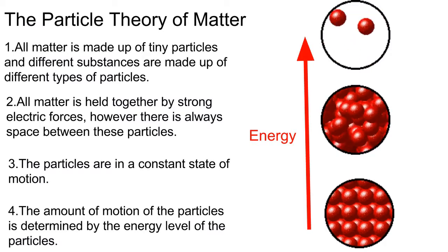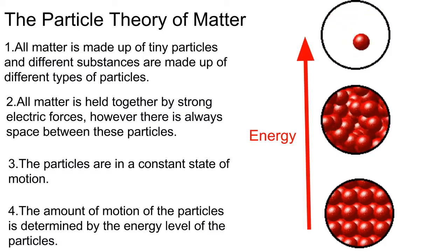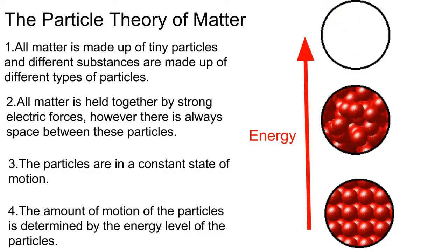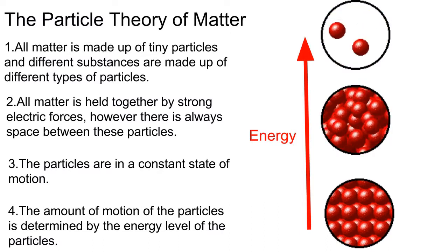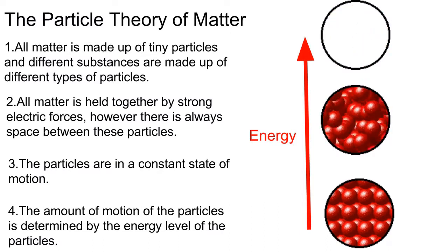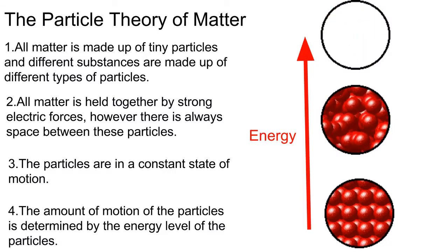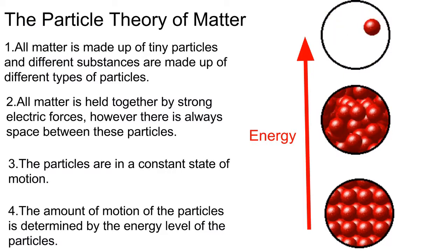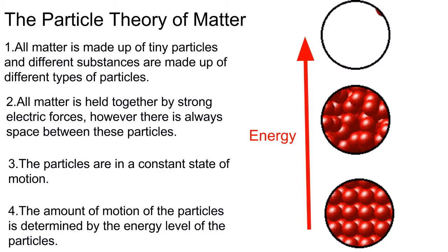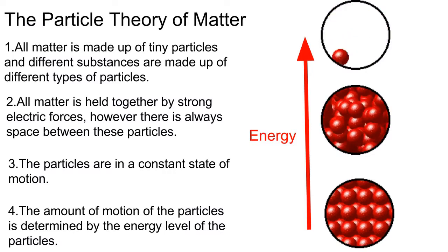As energy is added, you can see the particles begin to move much faster and have much larger spaces between them. In the top circle, the particles are at their highest energy state. The particles move so fast that they are difficult to keep track of, and the particles are only barely attracted to one another in this high energy state. That's all for now. Thanks for watching.